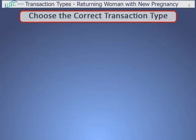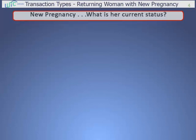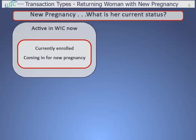The correct transaction type depends on her current status. There are four possibilities. The first is a woman who is active in WIC now. An example is any woman currently enrolled as breastfeeding or postpartum who's coming in for a new pregnancy. Or a less common situation would be a woman who shows on TWIST as currently enrolled as pregnant, but she tells you that the previous pregnancy had ended in miscarriage and now has a new pregnancy.